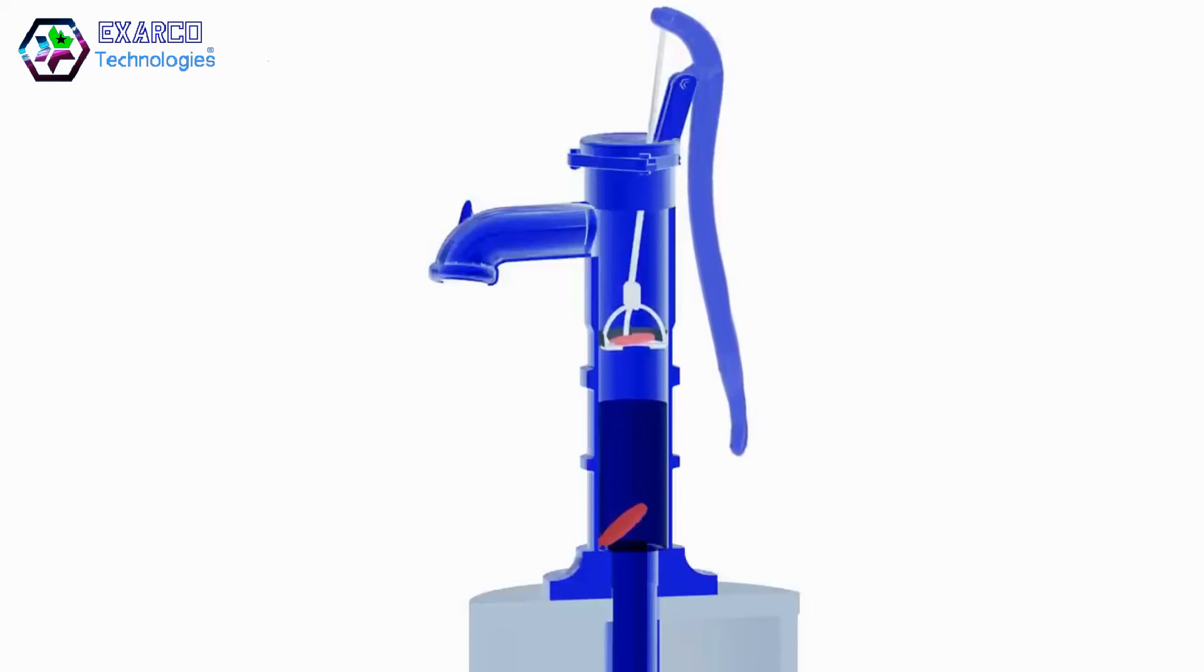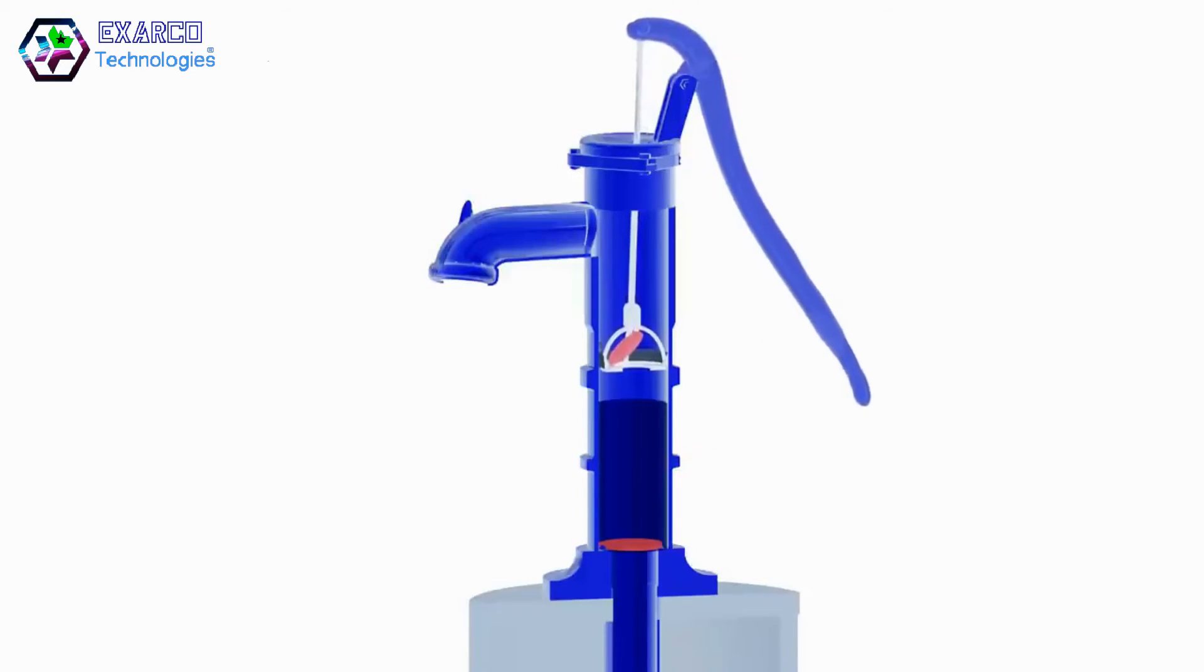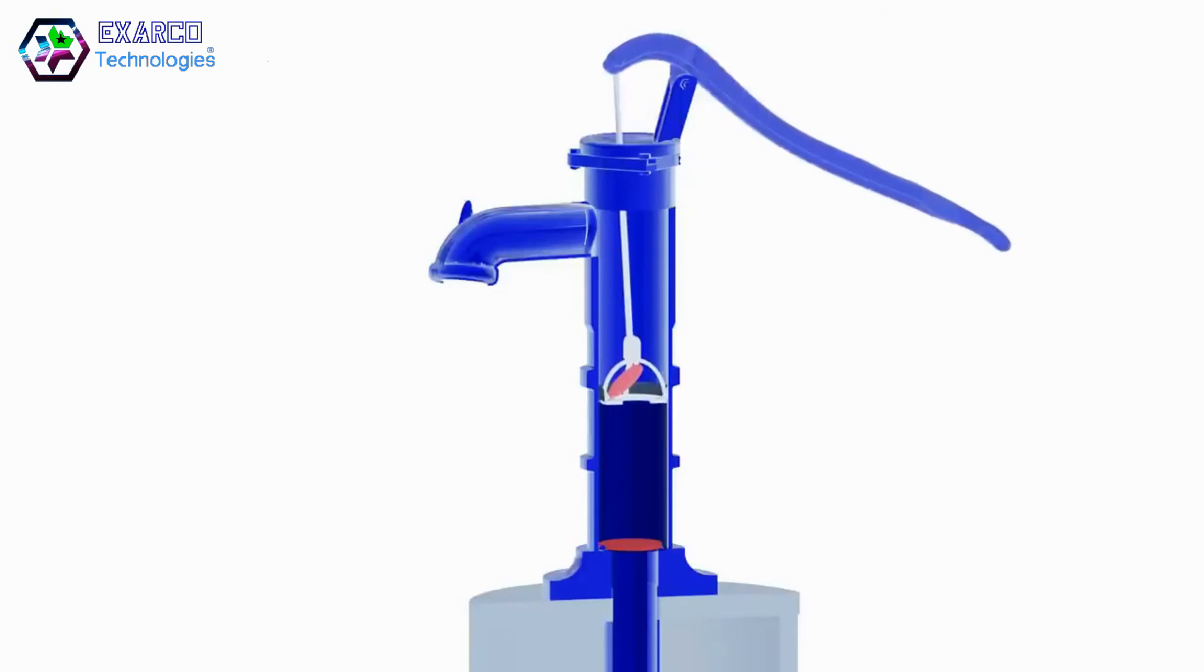Now the handle is pulled upwards. During this cycle, the piston valve opens and the water is drawn above the piston. Simultaneously, the foot valve closes and prevents water from returning back to the well.